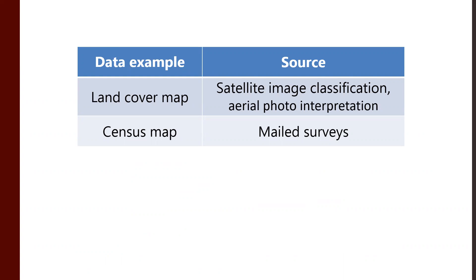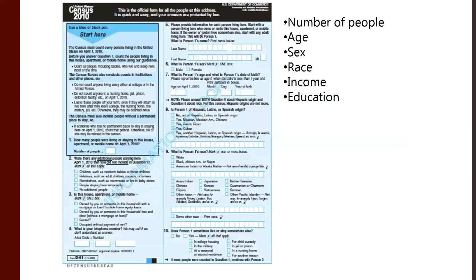Another piece of data people always want to talk about are census maps. You get your census in the mail every 10 years. In the US we had some kind of online response option; I did my 2020 census by mail. The census form asks some questions with some classifications — who lives here, what's there. We have race, age, and sex, sometimes asking about income or education depending on whether it's the official formal decadal census, which covers the basics, or interim community surveys.